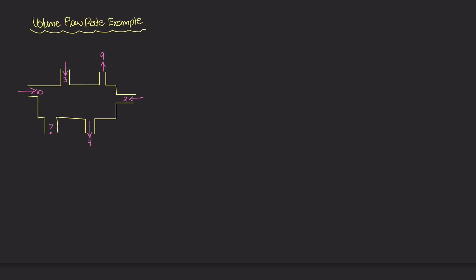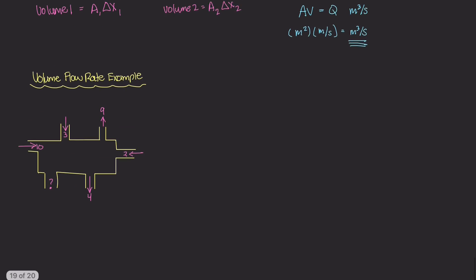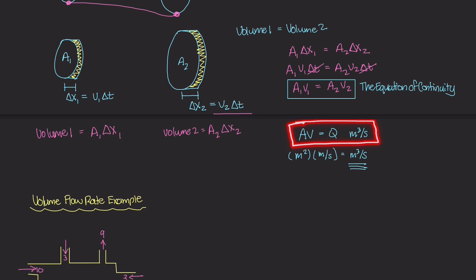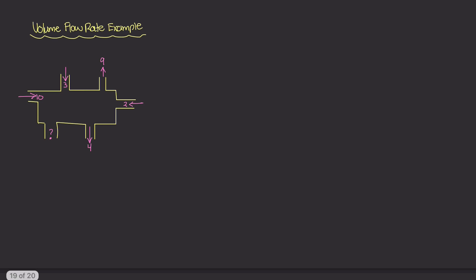Welcome to our first volume flow rate example. Very recently, we've been talking about flow rate and flow tubes and the equation of continuity. In our last few lectures, we learned about the equation of continuity, and we determined what the terms in that equation are. We've defined Q equals VA, where Q is volume flow rate — how much volume of liquid is moving through a point at a particular time. In this example, I want to do something pretty simple just to understand what volume flow rate is and how it relates to different types of systems that we can study.